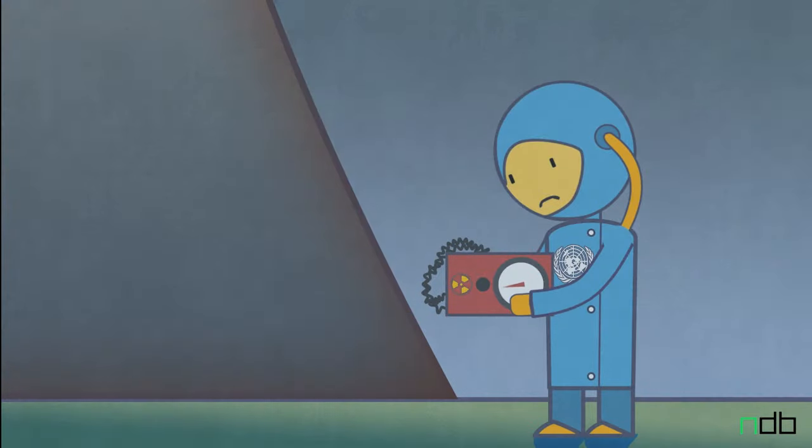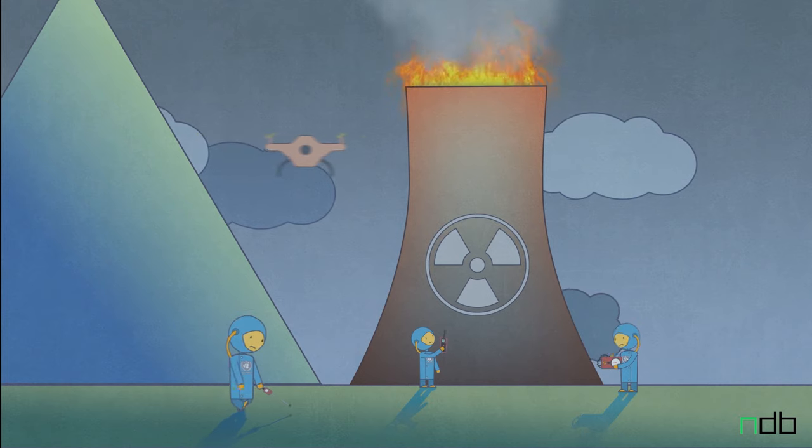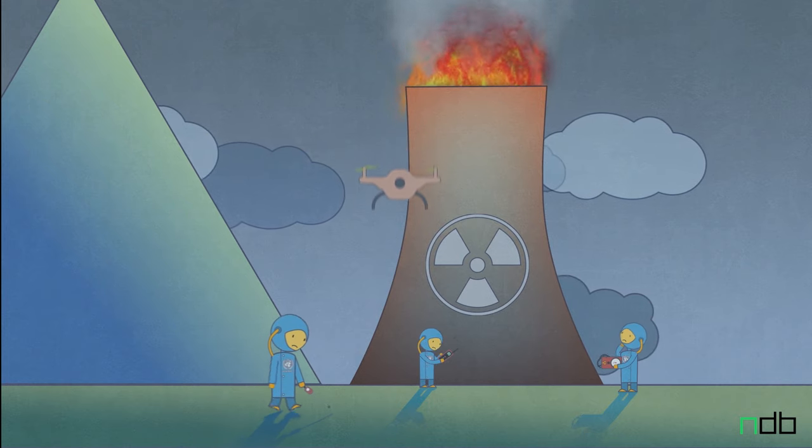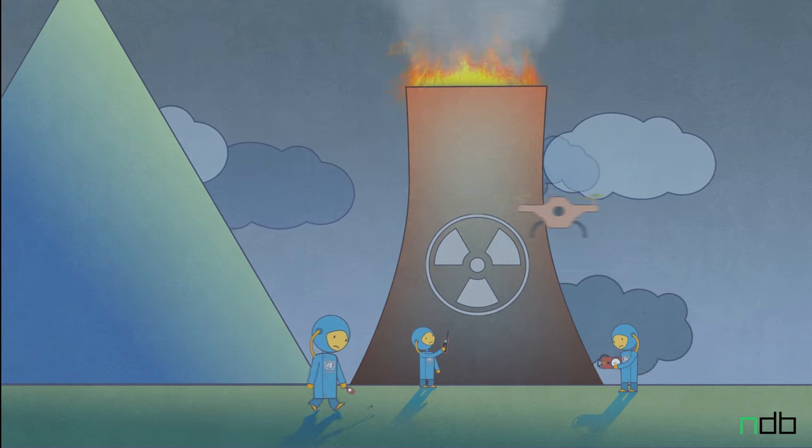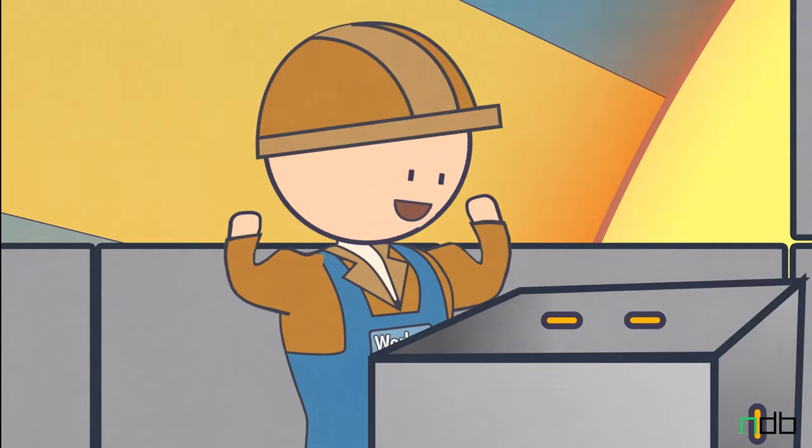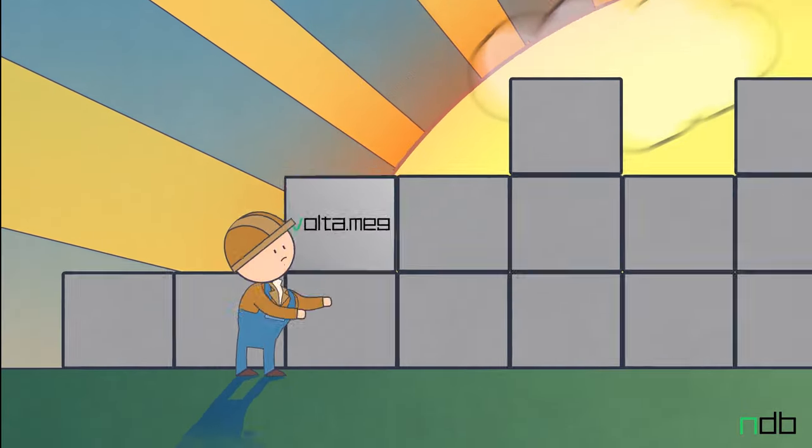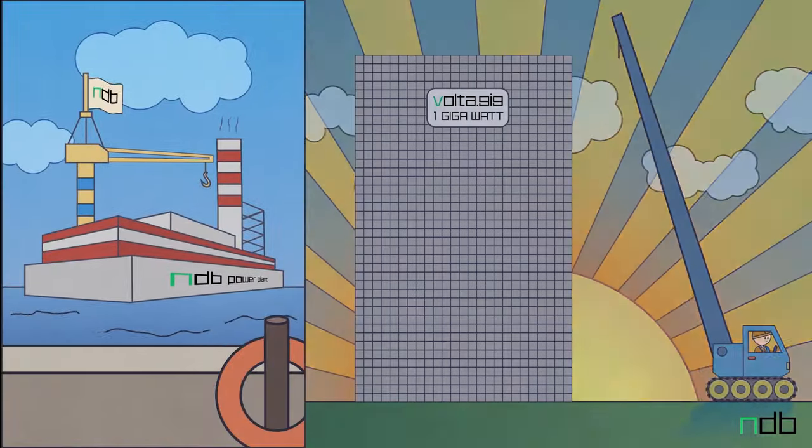The NDB could be used for disaster relief aid, to power survivor identification drones, and radiation monitoring systems after a nuclear disaster. NDB's technology could also be scaled to act as a high-power stationary or mobile power plant.